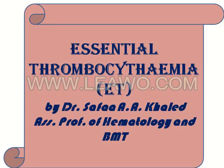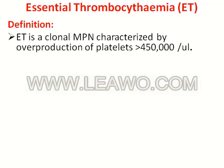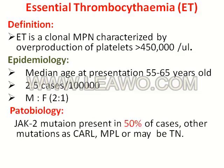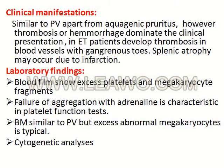The second disease is essential thrombocythemia, a clonal myeloproliferative neoplasm characterized by overproduction of platelets more than 450,000 per microliter. Median age at presentation is 55 to 65 years with slight male predominance, and JAK2 mutation is present in 50% of cases. Clinical manifestations are similar to polycythemia vera, apart from aquagenic pruritis, which is more characteristic of polycythemia vera. However, thrombosis or hemorrhage dominates the clinical presentation in essential thrombocythemia patients.